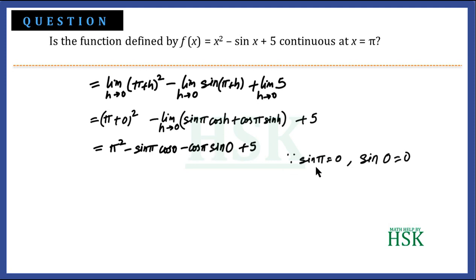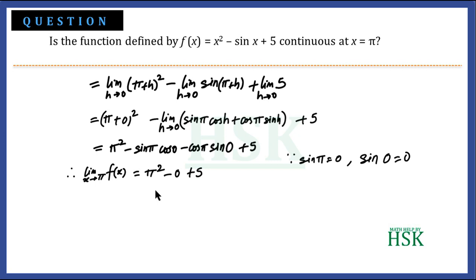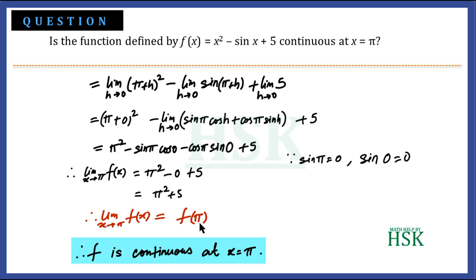Since sin π = 0 and sin 0 = 0, both terms vanish, giving π² − 0 + 5 = π² + 5. Therefore, the limit of x tends to π of f(x) equals f(π), which means f is continuous at x = π. This is the required answer.